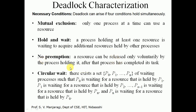The third condition is no preemption — a resource can be released only voluntarily by the process holding it, after that process has completed its task. Once a resource is allocated to a process, that process holds it until its entire task is completed and cannot be preempted in between. Other processes trying to acquire that resource are indefinitely blocked, so no preemption also contributes to deadlock.